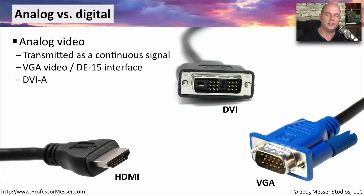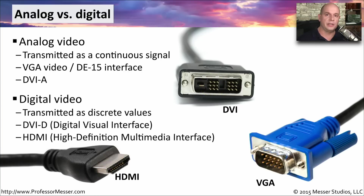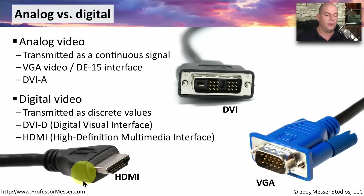Display signals can be transmitted in either an analog or a digital format. The analog format is transmitted as one continuous signal, and you'll usually see analog used over a VGA connection. Some DVI connections also support analog connectivity. A digital signal is sent as a discrete value — either a 1 or a 0 — and is often sent over a DVI cable running a DVI-D signal (D for digital), or HDMI, the High Definition Multimedia Interface. All signals sent over HDMI are always digital.